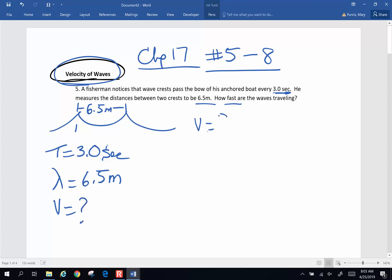Velocity of a wave is frequency times wavelength. We have wavelength. We're looking for velocity. Before we can do this, we have to find frequency. And we know that frequency is equal to 1 divided by the period.